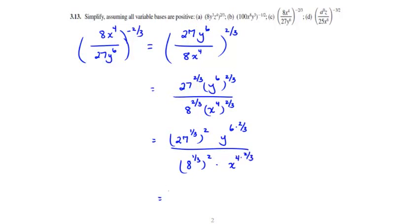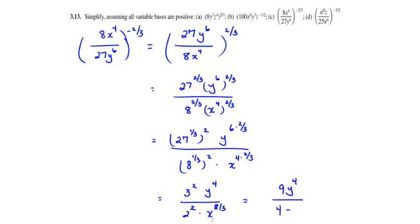We use the fact that 27 to the 1/3 power is the cube root of 27, which is 3, so that's 3 squared. y to the 6th times 2/3 is y to the 4th. In the denominator, 8 to the 1/3 is 2, so that's 2 squared, times x to the 8/3 power. This simplifies down to 9y to the 4th over 4x to the 8/3 power.